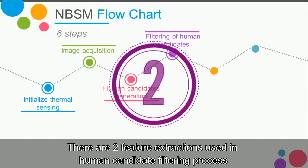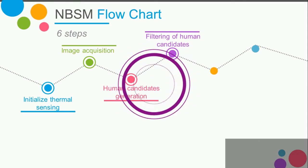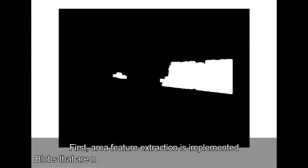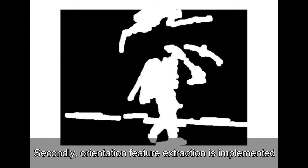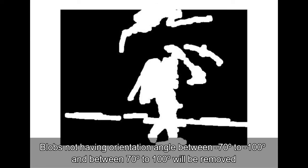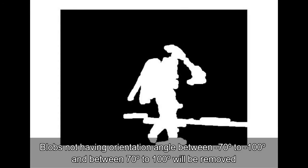There are two feature extractions used in the human candidate filtering process. First, area feature extraction is implemented. Blobs that are not within 5,000 to 10,000 pixels will be removed. Secondly, orientation feature extraction is implemented. Blobs not having an orientation angle between minus 70 degrees to minus 100 degrees and between 70 degrees to 100 degrees will be removed.